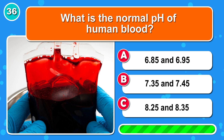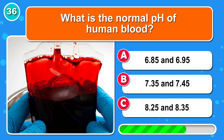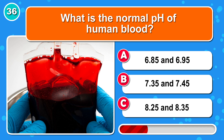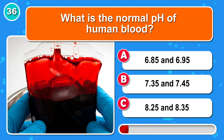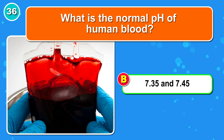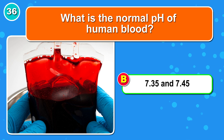What is the normal pH of human blood? It's B: 7.35 to 7.45.